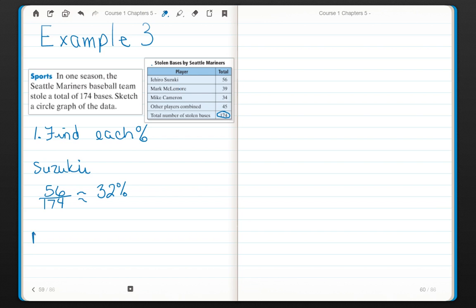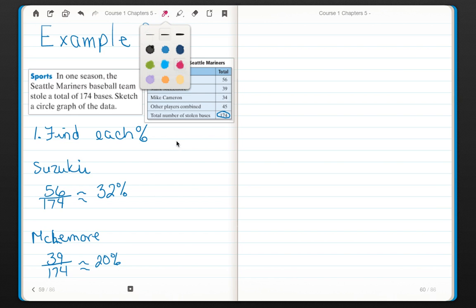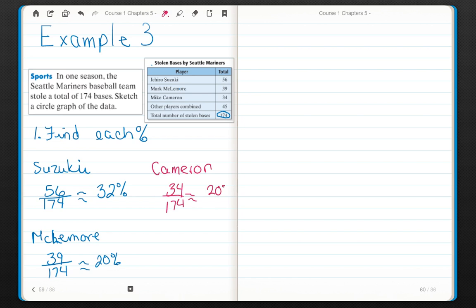McLemore stole 39 of the 174 bases. Cameron stole 34 of the 174. Let me correct this: Cameron is approximately 20%, and McLemore was 22%.